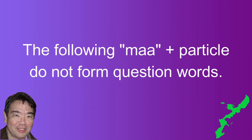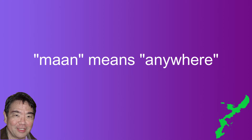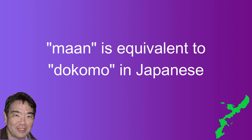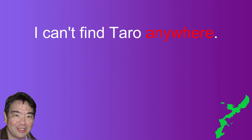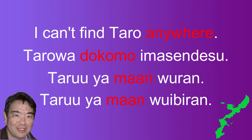The following examples use "ma" with a particle, however the combination is not a question word. The next example is "ma" used with the sentence particle "un" that we covered in video 41. "Ma un" means "anywhere" in a negative context, equivalent to Japanese "doko mo." The example is "I can't find Taro anywhere." In Japanese: "Tarō wa doko mo imasen desu." In Uchinaguchi: "taru ya man uran" in casual form and "taru ya man uibiran" in polite form.